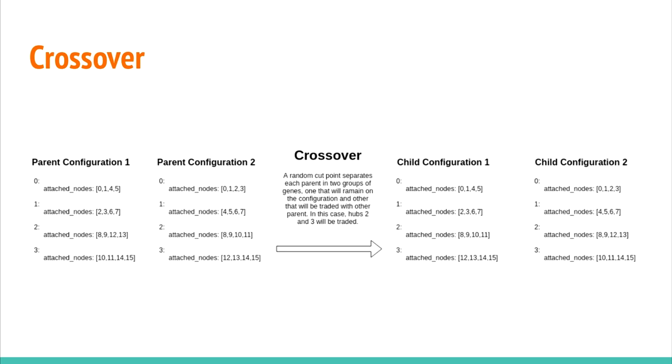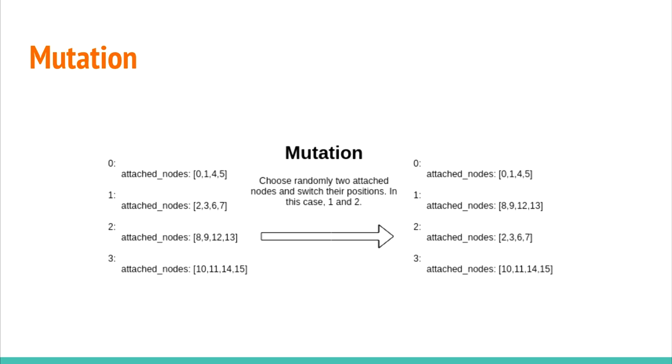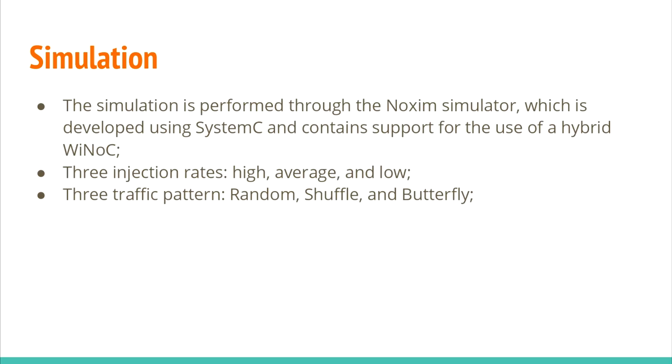An individual is a solution to our problem. This solution is represented by a quartet of attached nodes. The crossover operation consists of two individuals changing information, generating two new individuals. These individuals will be evaluated by fitness functions and classified. The fitness functions use the SNOC-SIM simulator. The mutation operation changes randomly the attached nodes, generating a new configuration.